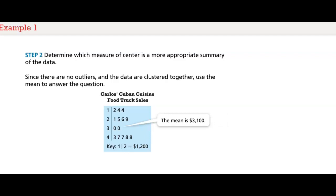The mean is $3,100. The median is $2,950. The average typical daily revenue for the food truck, or mean, is $3,100.